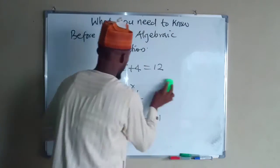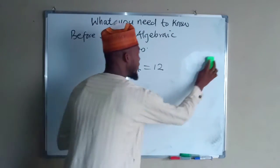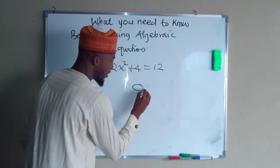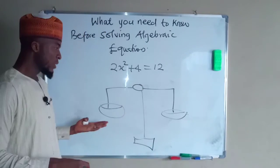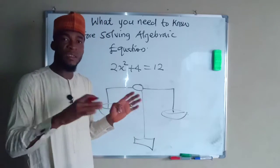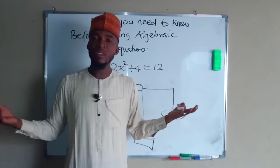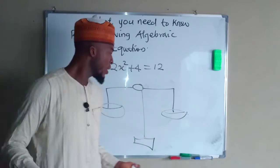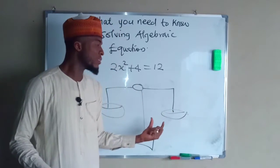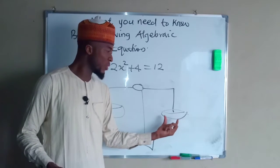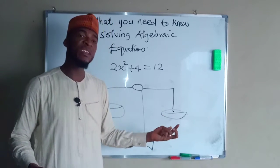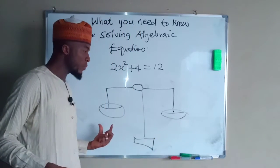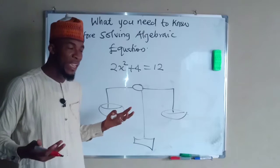The best way to explain the equality sign is by the use of a scale. Suppose this is a scale — if the scale is at equilibrium, it means both the left and right hand sides are balanced, in the same position. But as long as you add a weight or mass to the right hand side, it will be inclined because that side becomes heavier.